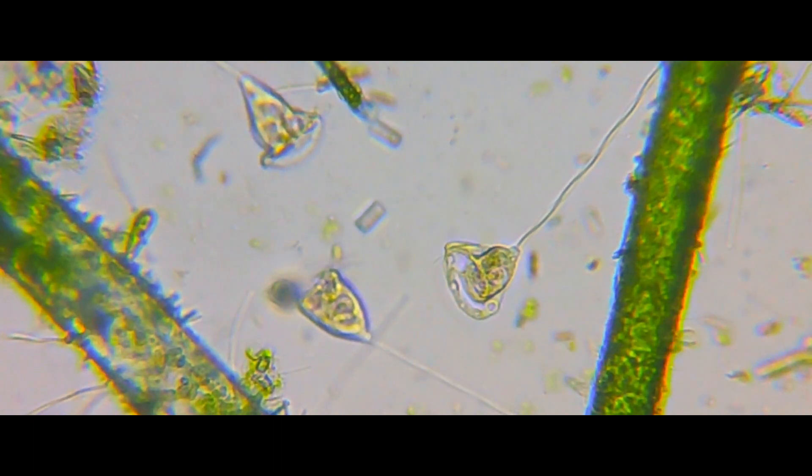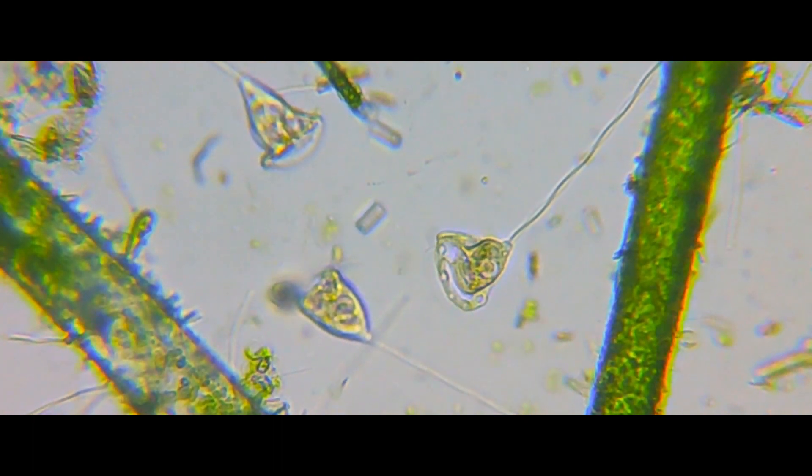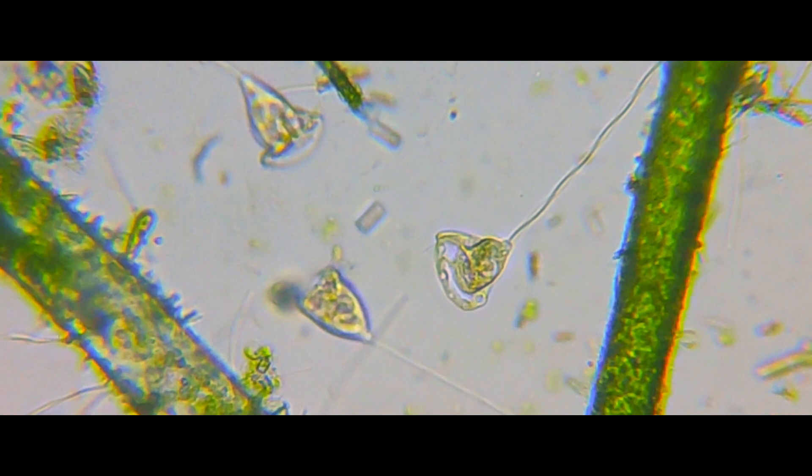There are over 150 different species of vorticella. And to classify them, they are eukaryotes from the ciliophora phylum.